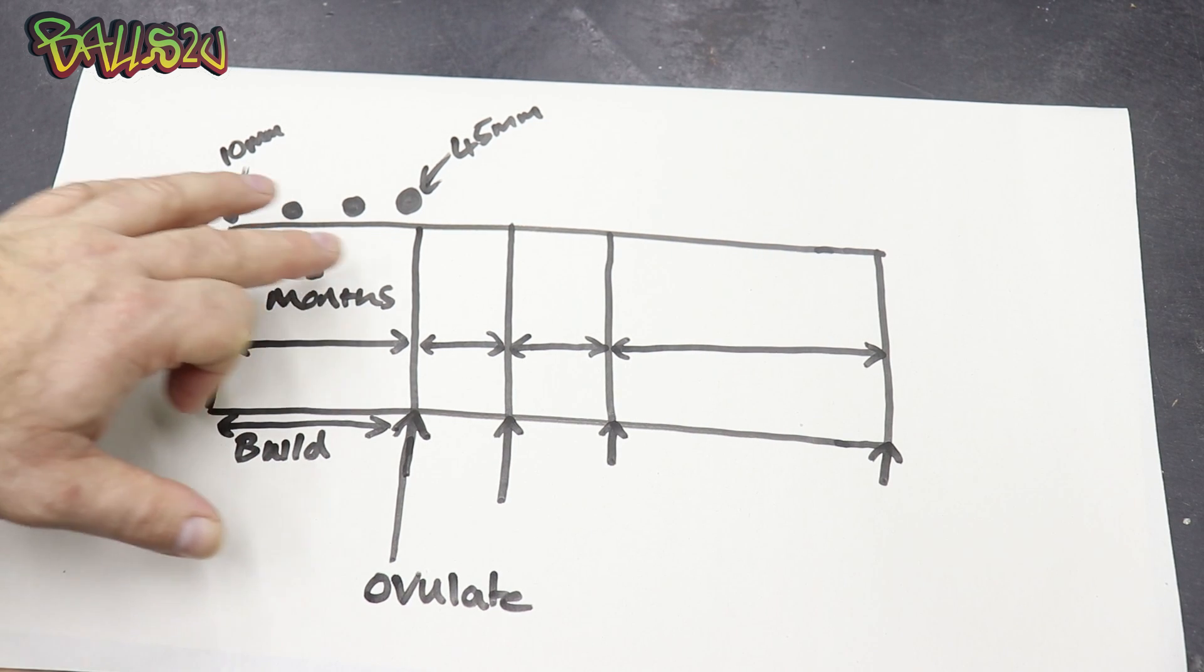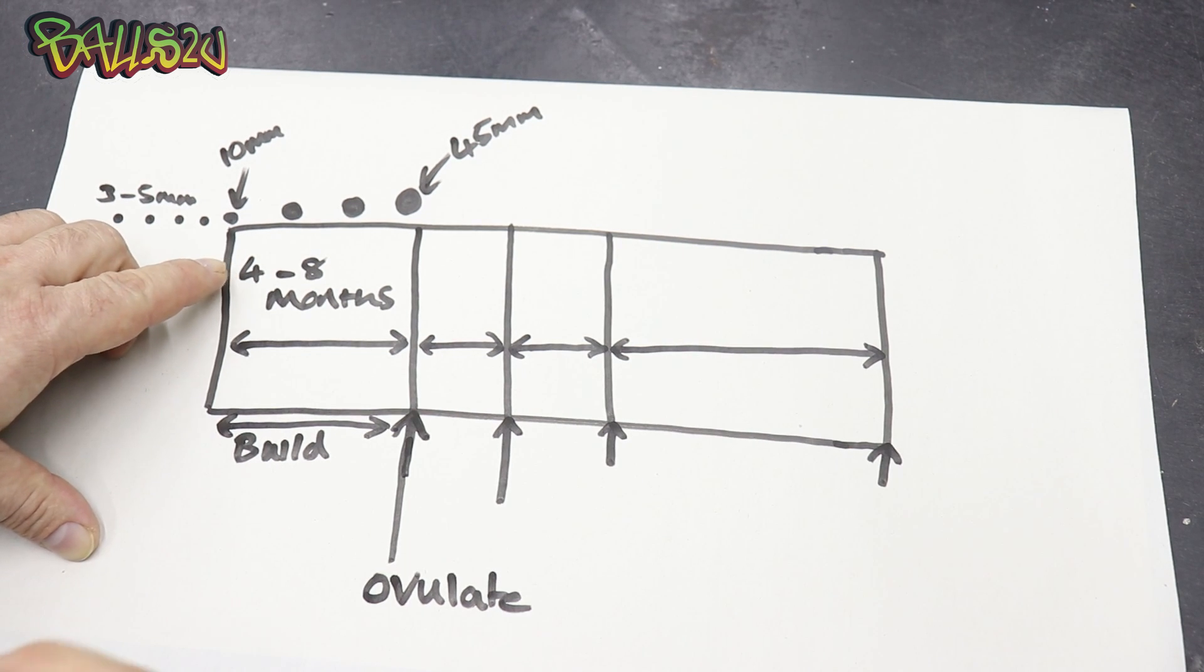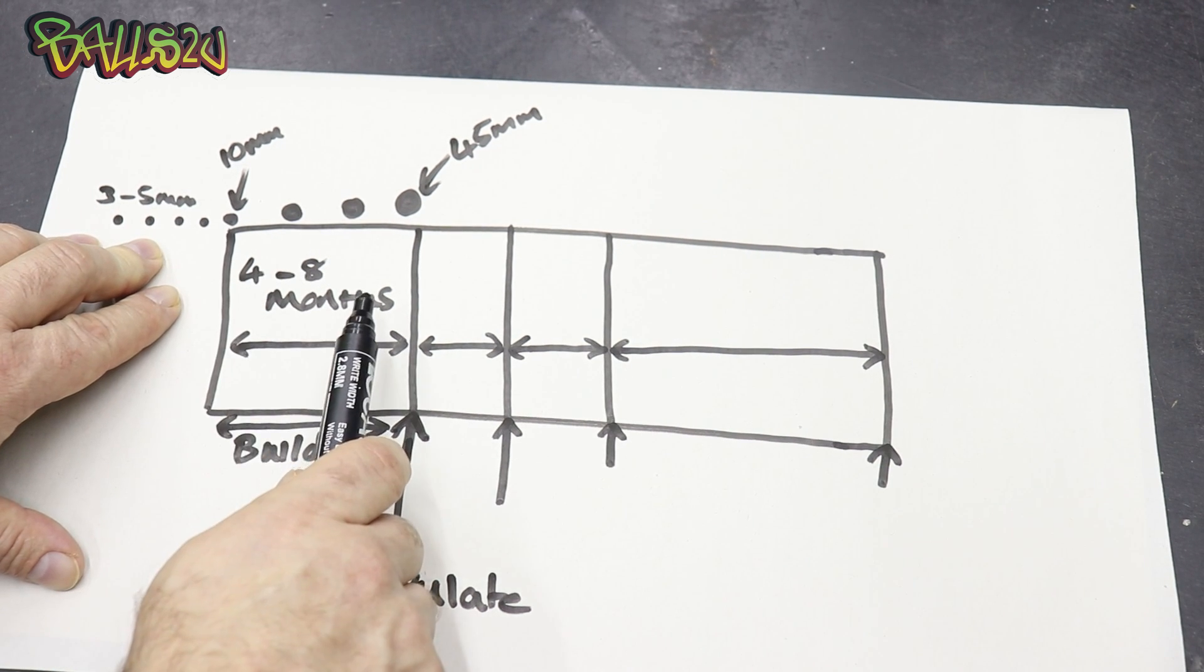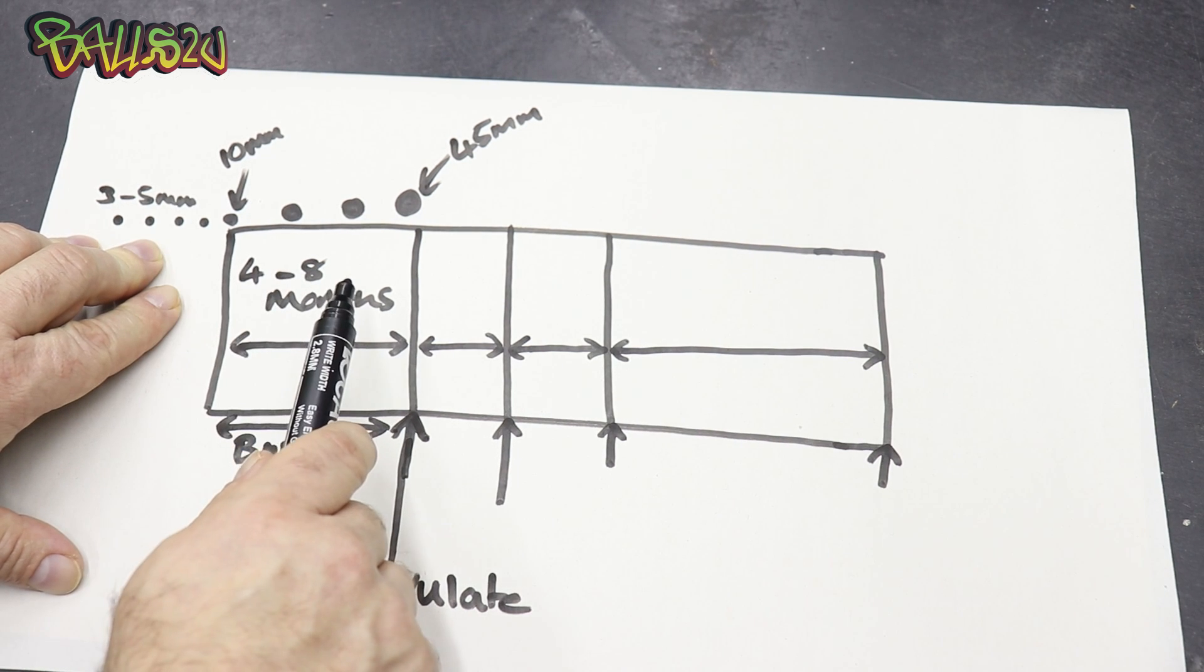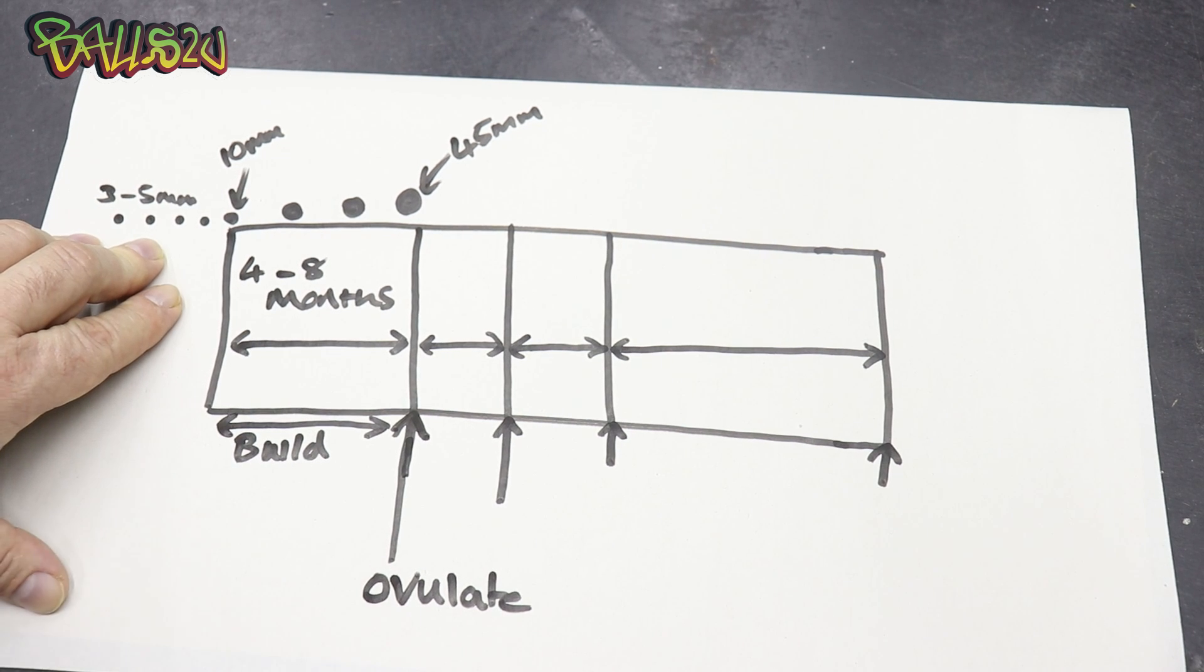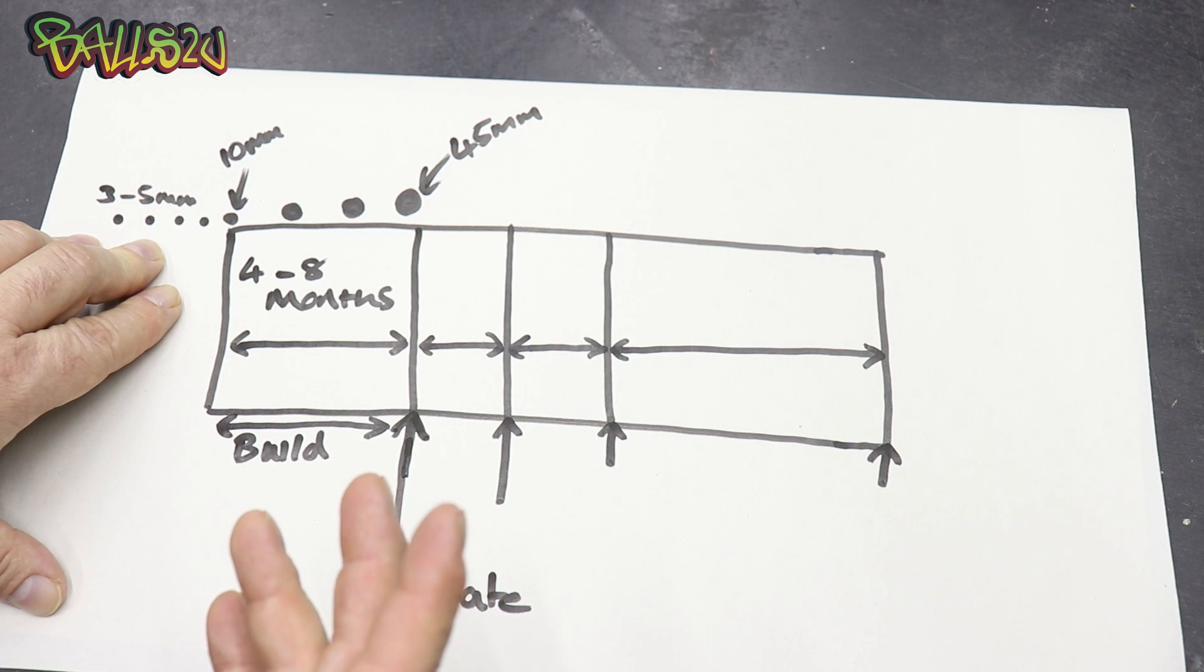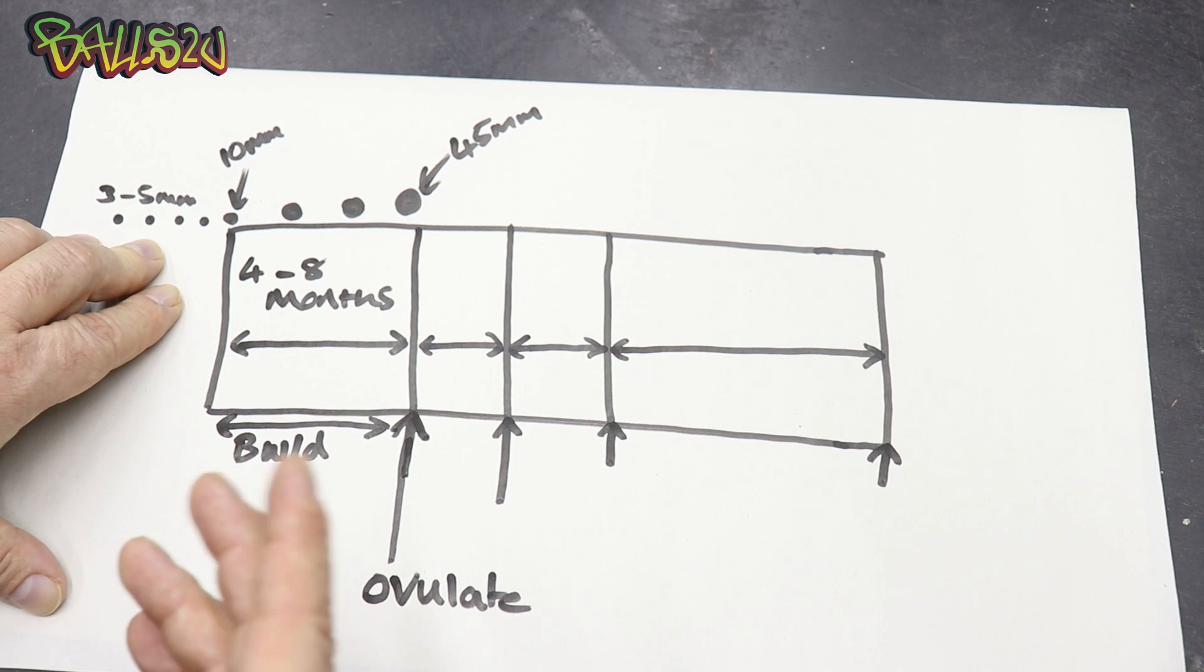So from the ten to the 45 millimeters is what we call the build stage. She's building the follicles up to that size to get them into the oviduct to where they're going to be fertilized. This stage is very important; this stage is where a lot of people make mistakes.